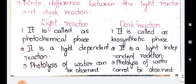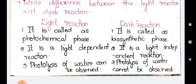The next question: 'Write differences between light reaction and dark reaction' in table form. First: light reaction is called photochemical phase; dark reaction is called biosynthetic phase. Second: light reaction is a light-dependent reaction; dark reaction is a light-independent reaction — it does not depend on light and can complete even when light is absent. Third: photolysis of water occurs in light reaction; photolysis of water cannot be observed in dark reaction.